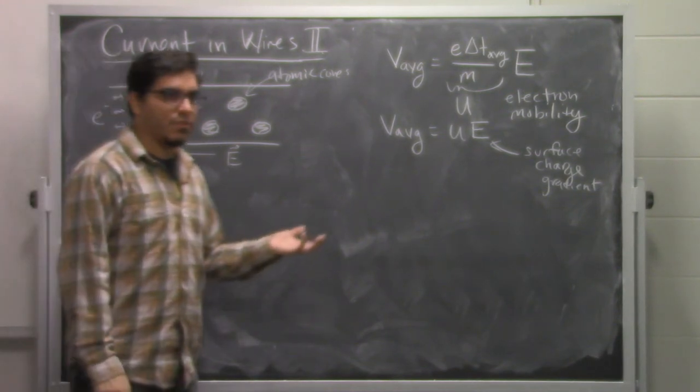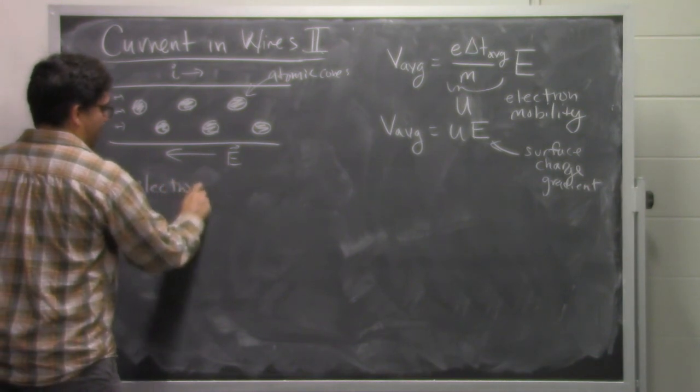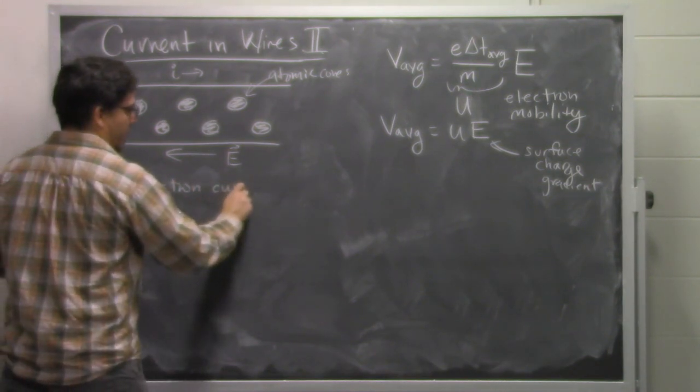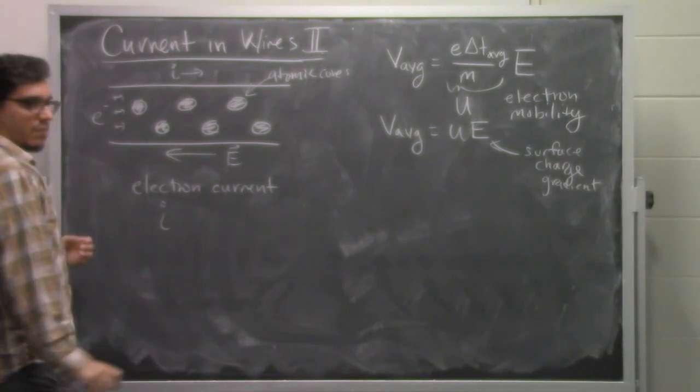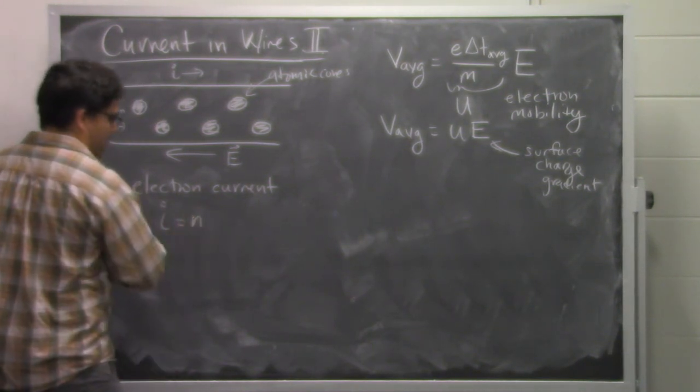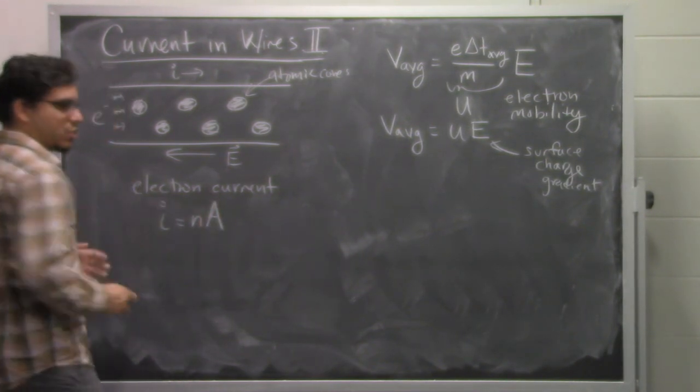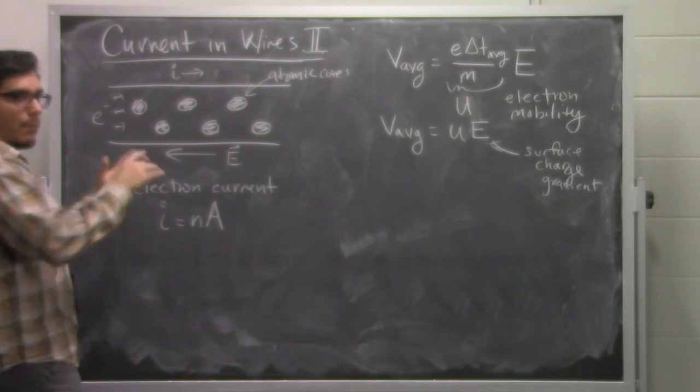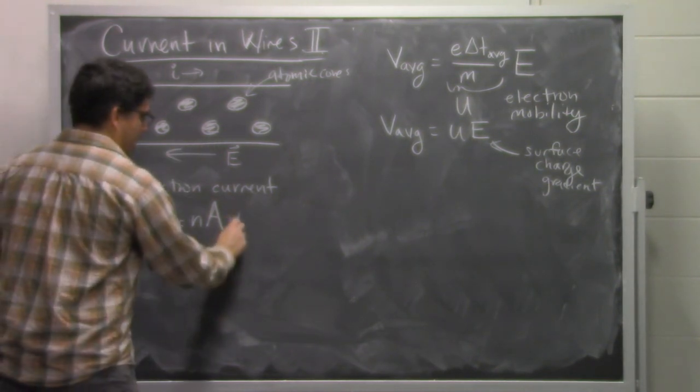Now in a previous video, what we did is we talked a little bit about this thing that we called the electron current, which is the amount of electrons passing a point per unit time. We gave it the symbol I, and we said that it was related to the number density, that is the number of charge carriers that are available to move, the cross-sectional area of the wire, that is how big it is when you're looking at it like a tube, and the average velocity.